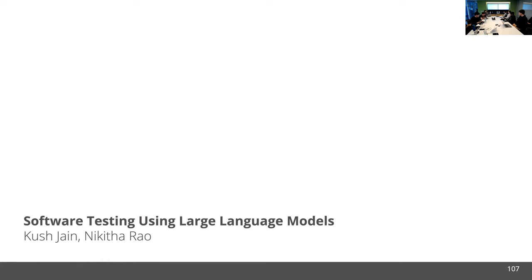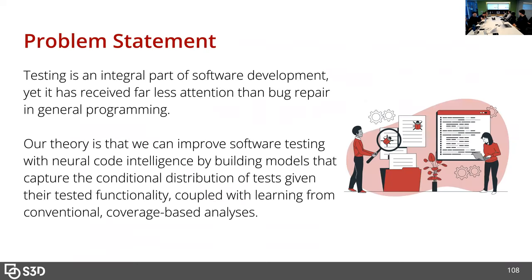We're presenting on software testing using large language models. Testing is a very important part of software development — as you write code, you also have to correspondingly write unit tests. However, testing in the space of language modeling has received a lot less attention than things like code generation and bug repair. Our idea is that we can improve state of the art in software testing through using large language models. We want to model the distribution of tested functionality given the code itself, and tie this with coverage-based analysis to ensure the tests we generate actually run and are useful to developers.